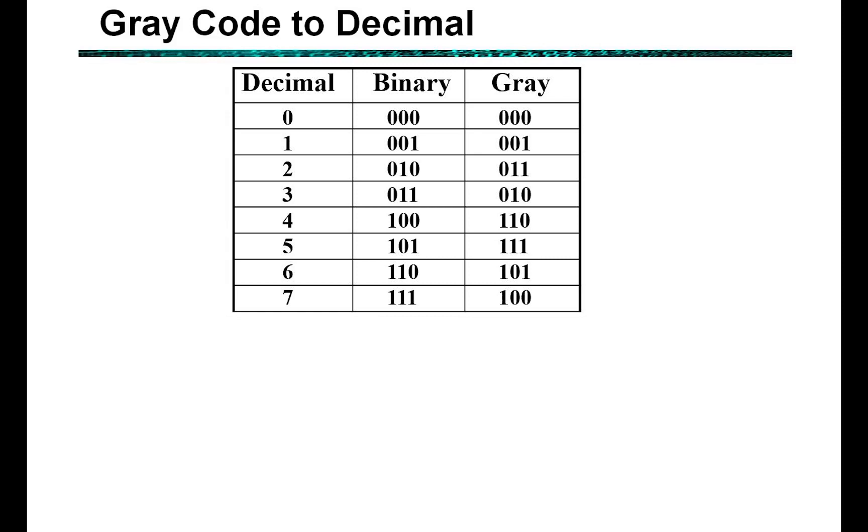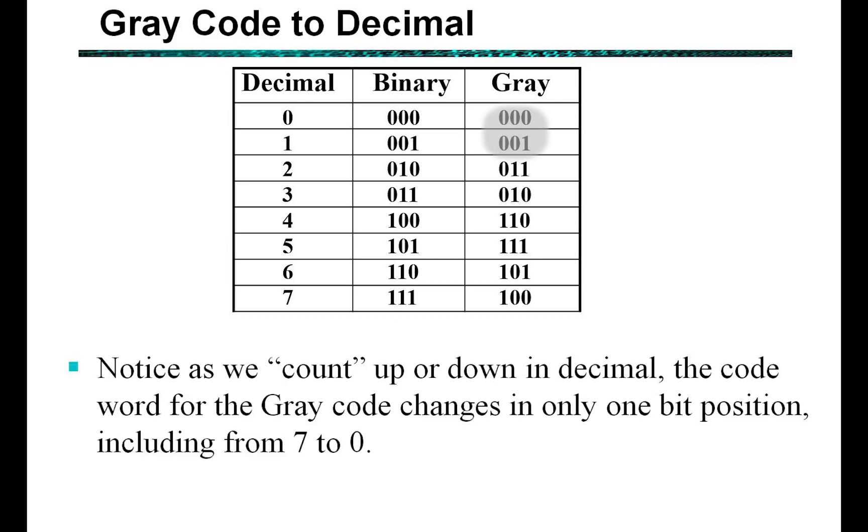The idea of the grey code is that it's a code having the property that only one bit at a time changes between codes during counting. So you'll notice here that as we count up or down in decimal, say between 0 and 1, or 1 and 2, then the code word for the grey code only changes by one bit position. So that includes between 7 and back to 0, whereas the 3-bit binary code changes multiple bits at a time in certain circumstances.